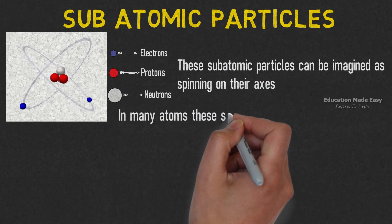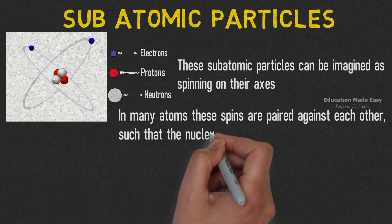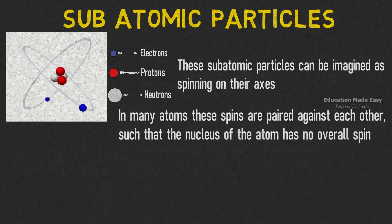In most of the atoms, these spins are paired against each other, such that the nucleus of the atom has no overall spin.